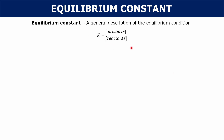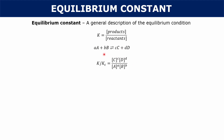For all of these, they're all going to have the general formula where K — the equilibrium constant — is going to be the concentrations of the products over the concentration of the reactants, each raised to the power of their stoichiometric coefficients. So that's the general form of any equilibrium constant that we're going to look at.